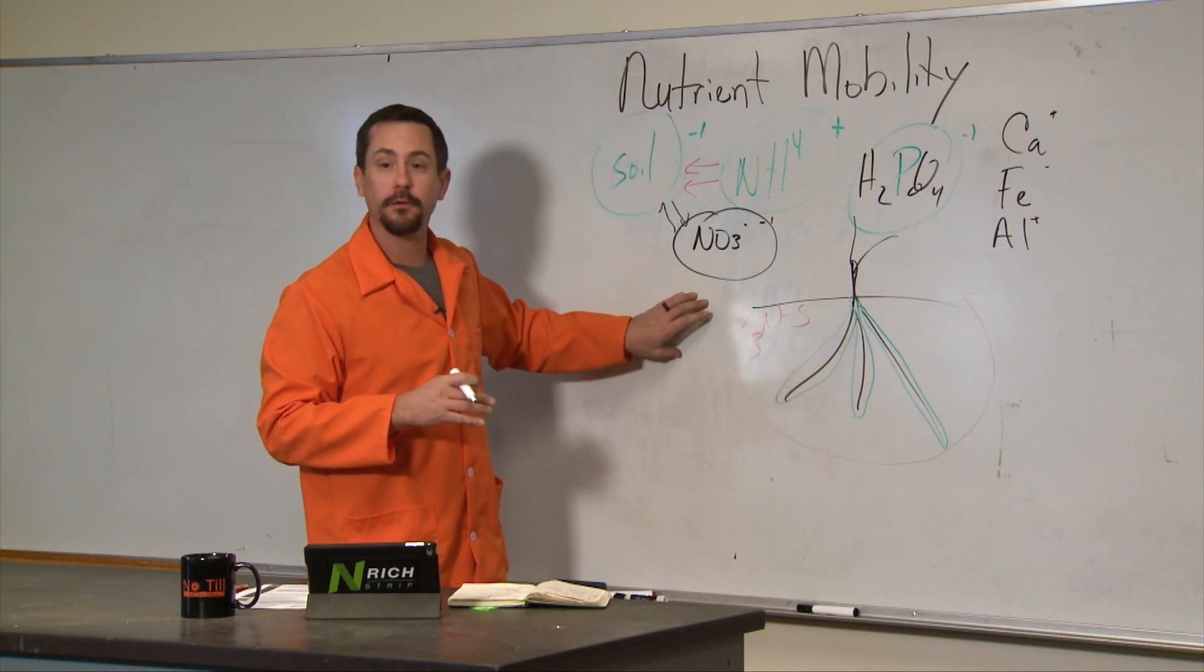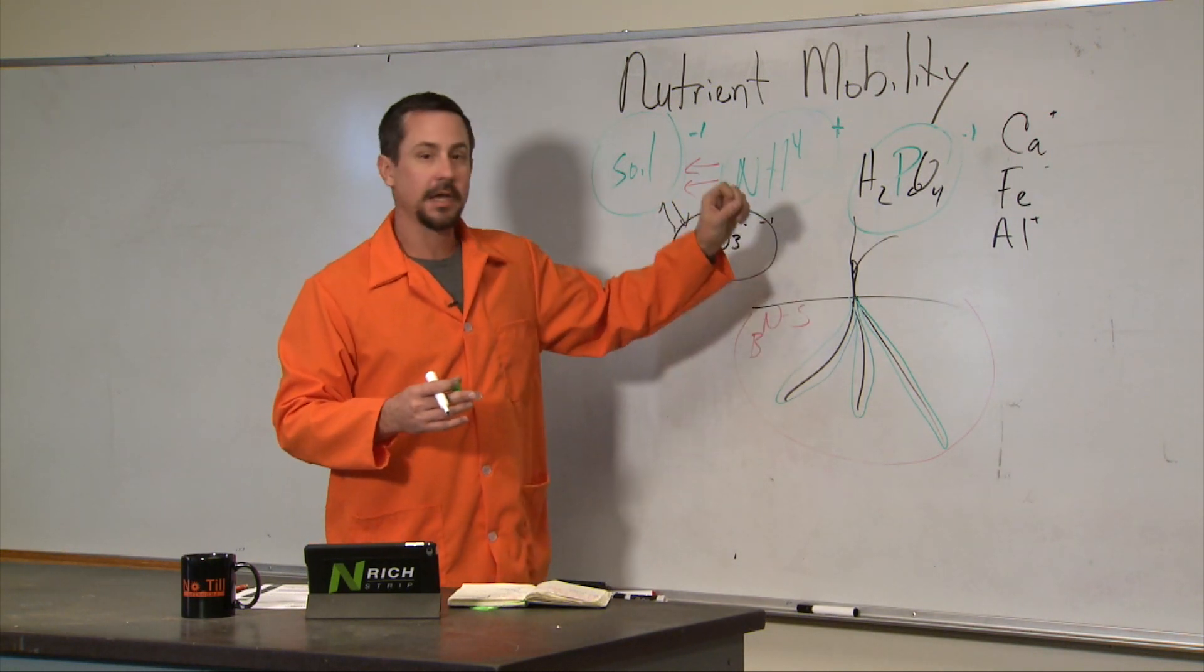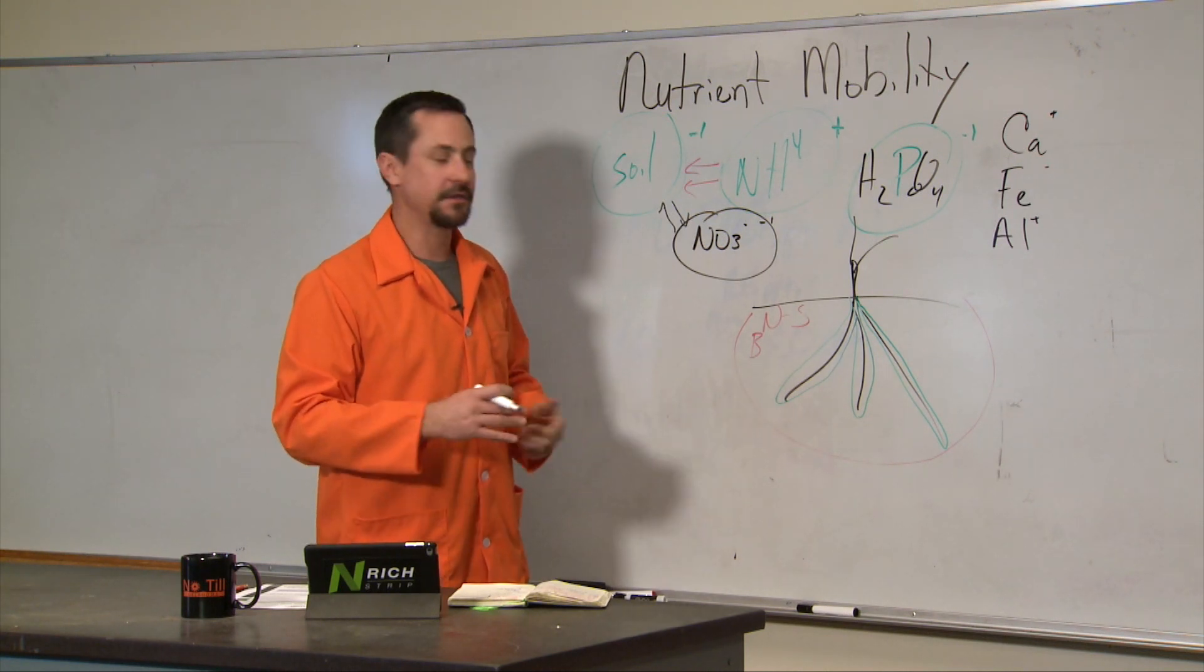So that's why for nitrogen, sulfur, and boron, it's a yield-goal based recommendation. And for things like phosphorus, iron, manganese, and zinc, it's a concentration or sufficiency based recommendation.